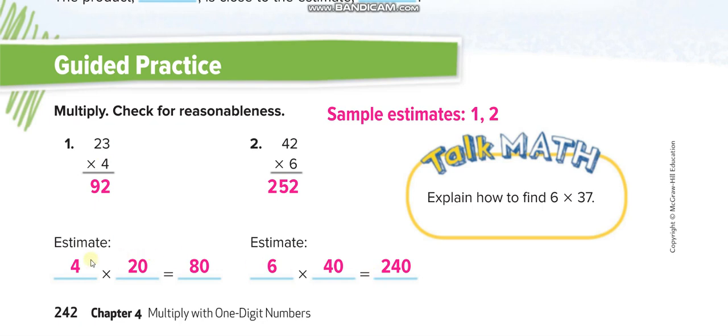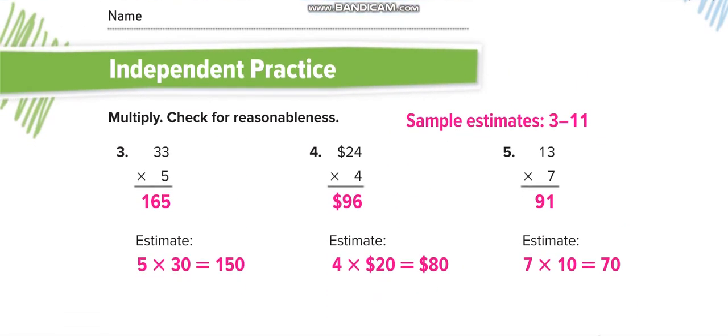Similarly, this one guys. These are the estimations—if you want you can write, but not necessary, okay? So this one: 4 times 3 is 12, 2 here, 1 up, and then 4 times 2 is 8 plus 1 is 9, so 92. 6 times 2 is 12, 2 here, 1 up here. 6 times 4 is 24 plus 1 is 25.